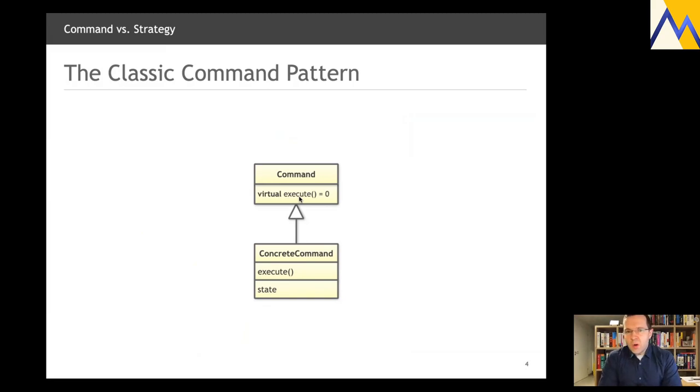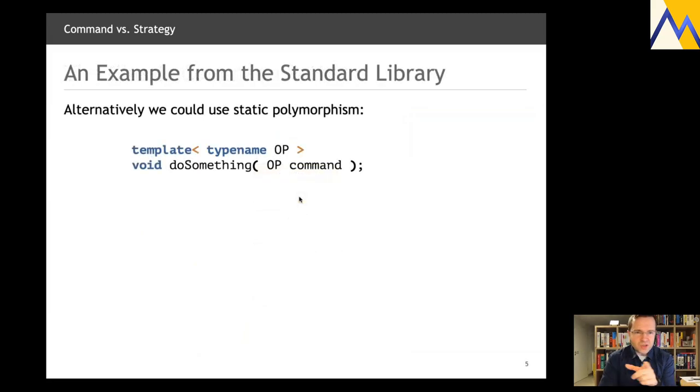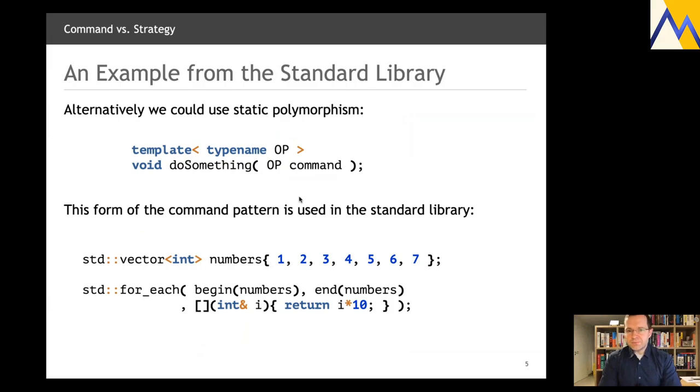This, however, is not the only kind of command that you have. We can also use this in the context of static polymorphism. Imagine some function that is given some operation, short op, this could be a command. And this is indeed used in the standard library, more specifically in the standard template library, in, for instance, the forEach function. std::forEach takes some beginning iterator, some end iterator, and some action. Some action that is performed for every single argument, a command, something that you can specify that is invoked whenever necessary.